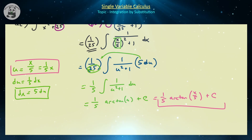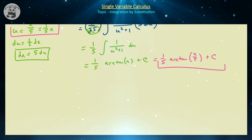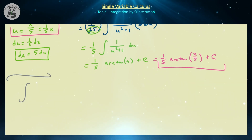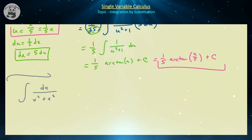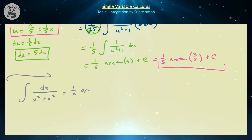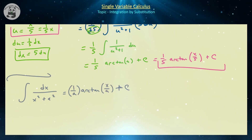You should be able to see that we can generalize this identity quite easily because 5 was just a number. More generally, the integral of dx over x² plus a² is always equal to one over a times arctan(x/a) plus c.